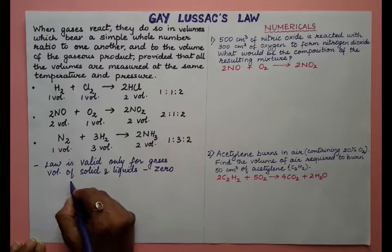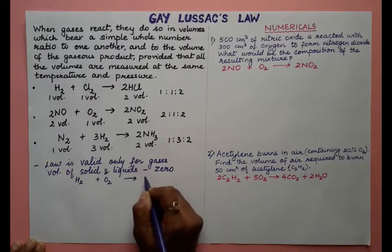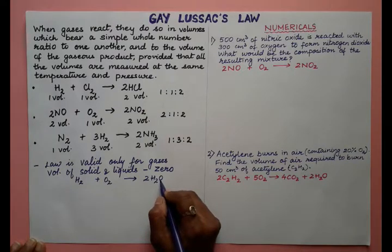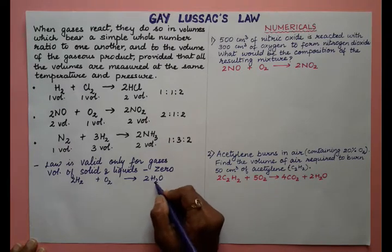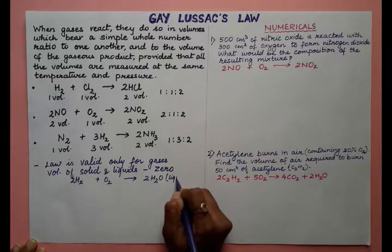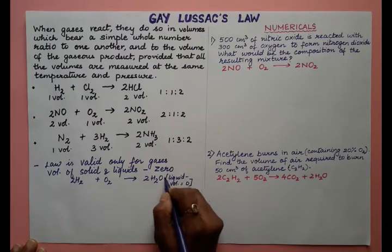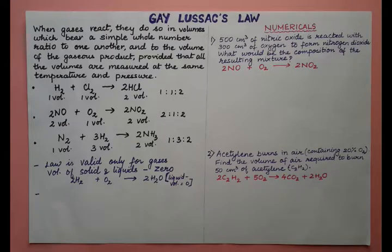For example, when hydrogen reacts with oxygen, we get water vapour. If the water is in the form of liquid, we do not calculate its volume — the volume of liquid water is taken as zero. But if it is in the form of steam, we do calculate it. This law explains the relationship between the volumes of gases only, not the volume of solids or liquids.